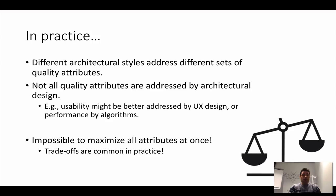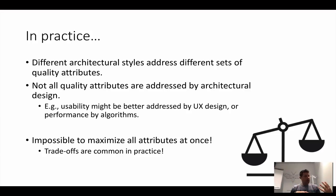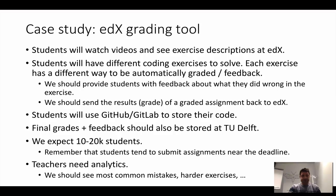In practice, it is impossible to design an architecture that favors all those topics. What we do in practice involves a lot of trade-offs — if I favor this, I'm going to lose a little bit of that. This is why software architecture can be tricky.